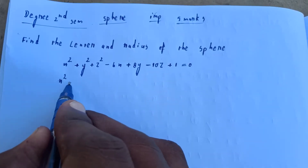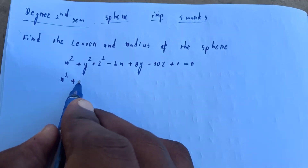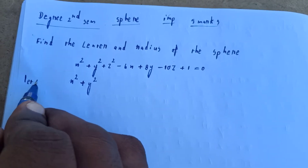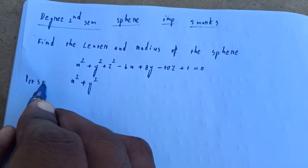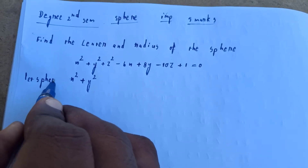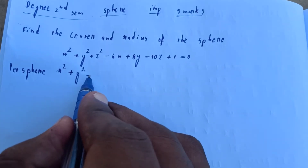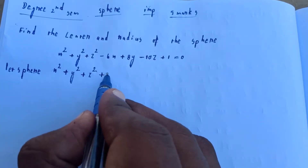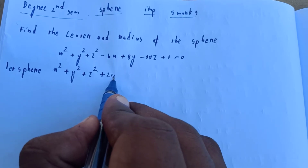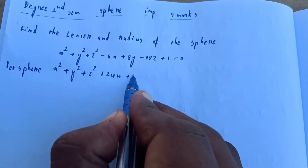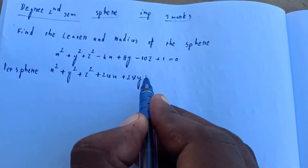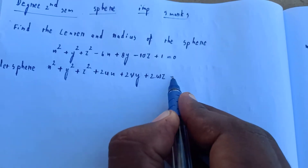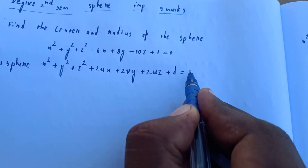Compare this with the general sphere equation: x squared plus y squared plus z squared plus 2ux plus 2vy plus 2wz plus d is equal to 0.